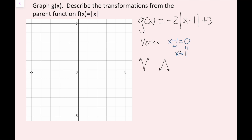The y value of my vertex is always the number that's being added to the absolute value expression. In this case, it's positive 3. If I saw a minus sign, it'd be negative 3. So my vertex is (1, 3), written as an ordered pair. Once I find my vertex, I can plot that — I'll plot (1, 3).